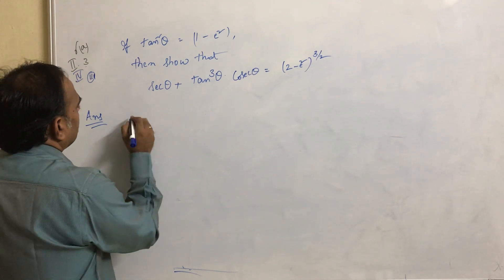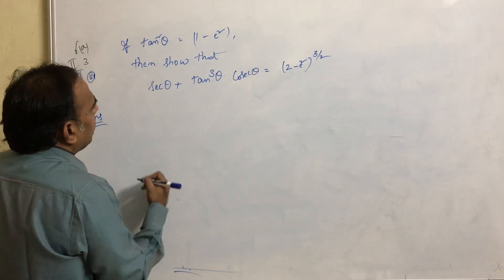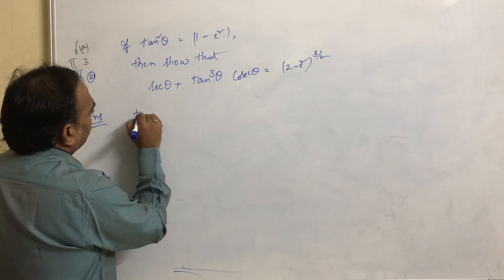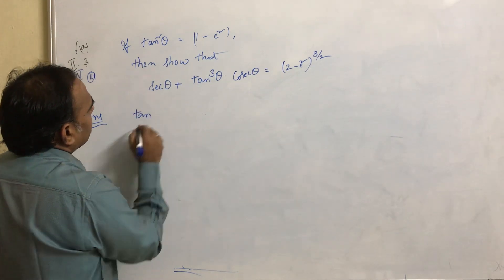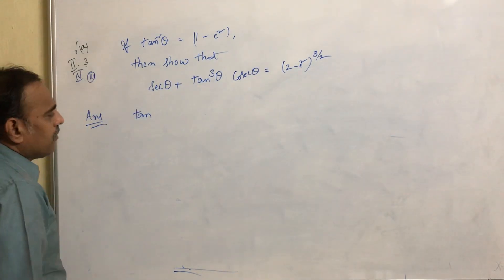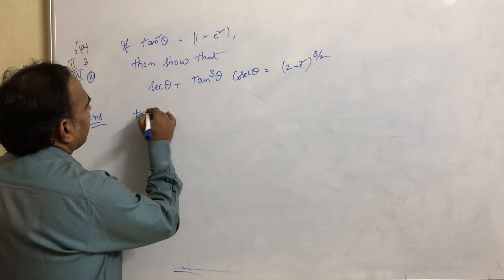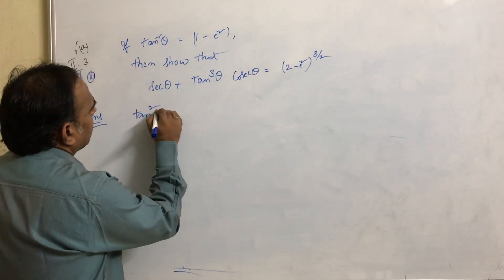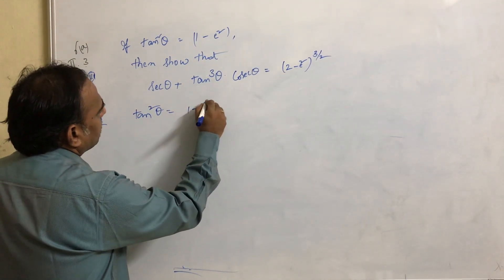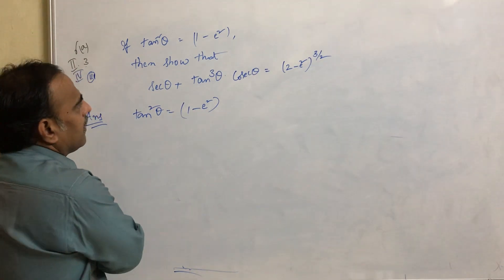First, what we will do? We need to first write what is the given. For any problem, if we write whatever is given, half of your problem is solved. Tan squared theta equals 1 minus e squared — this is the given.